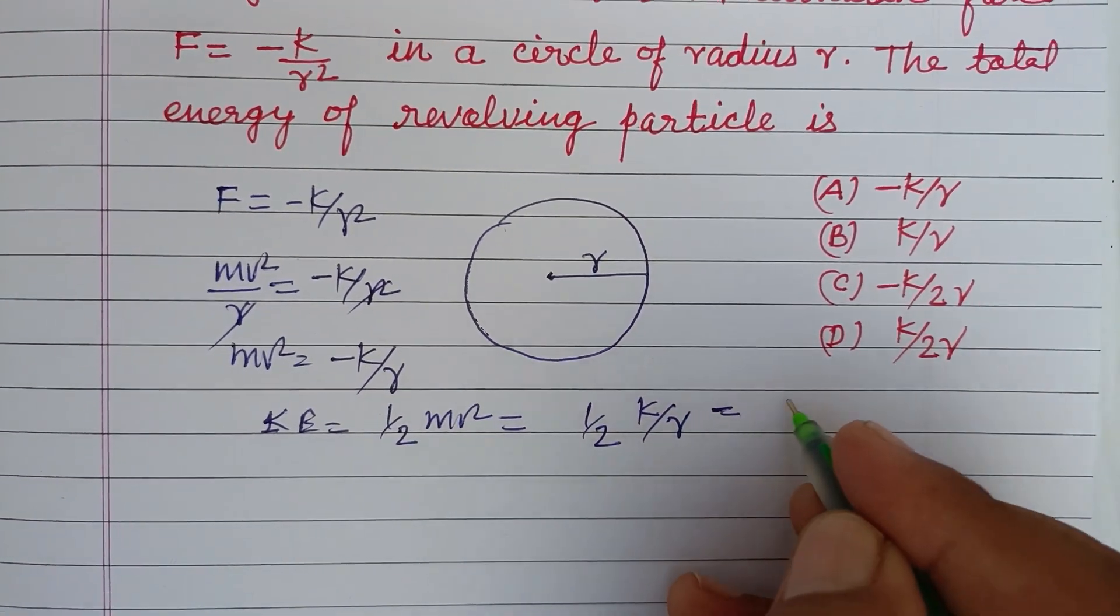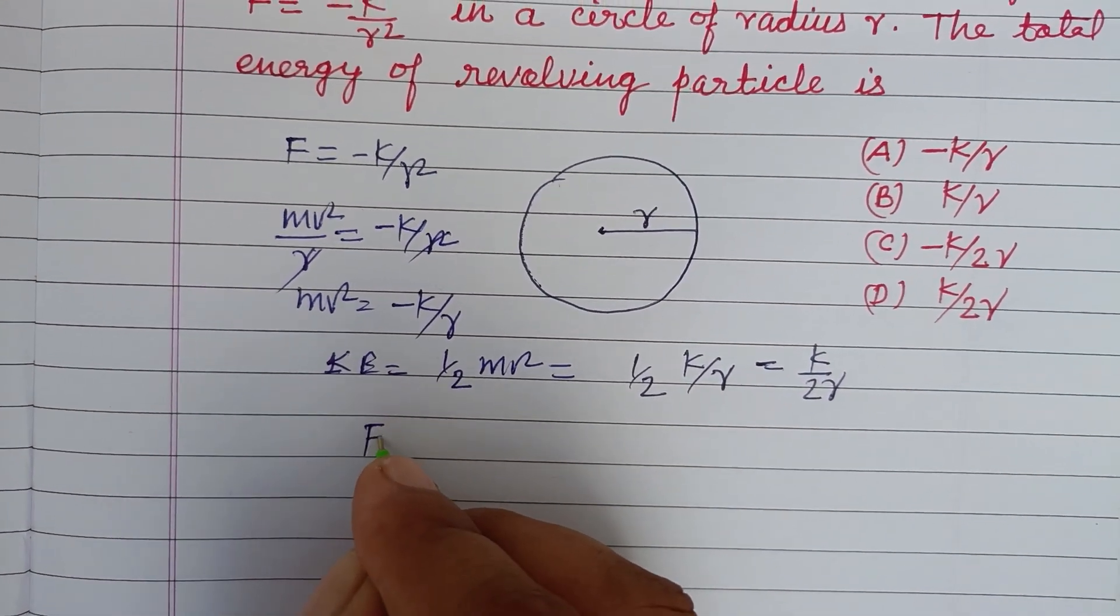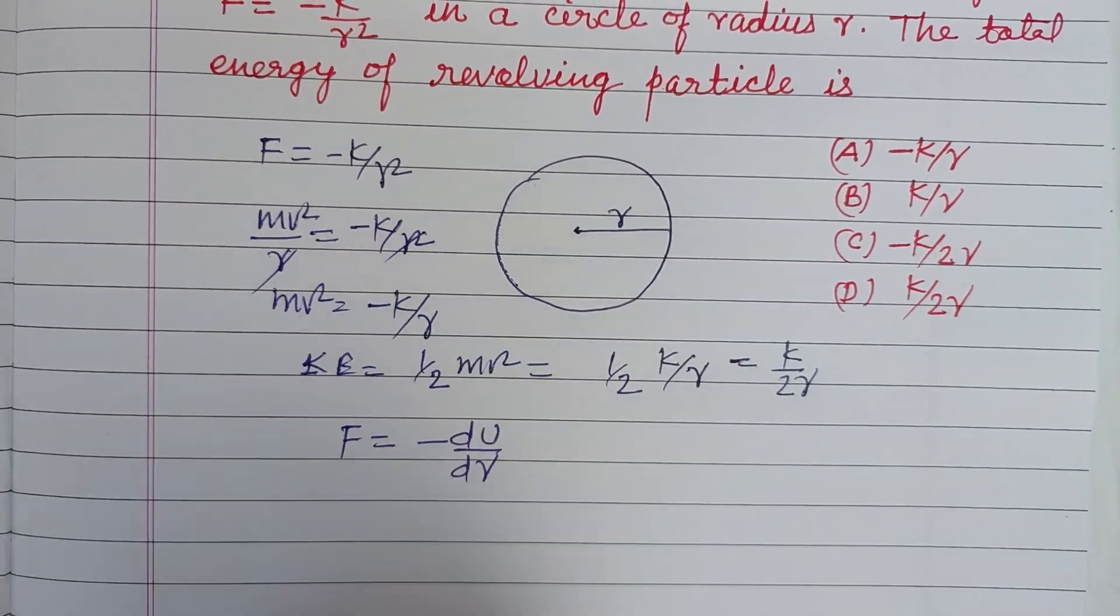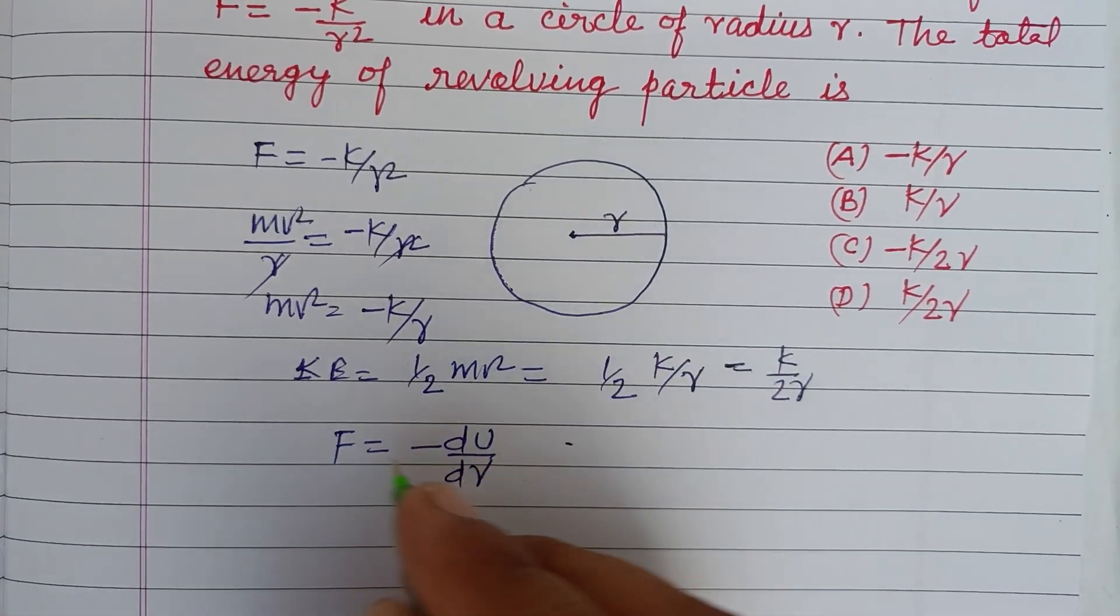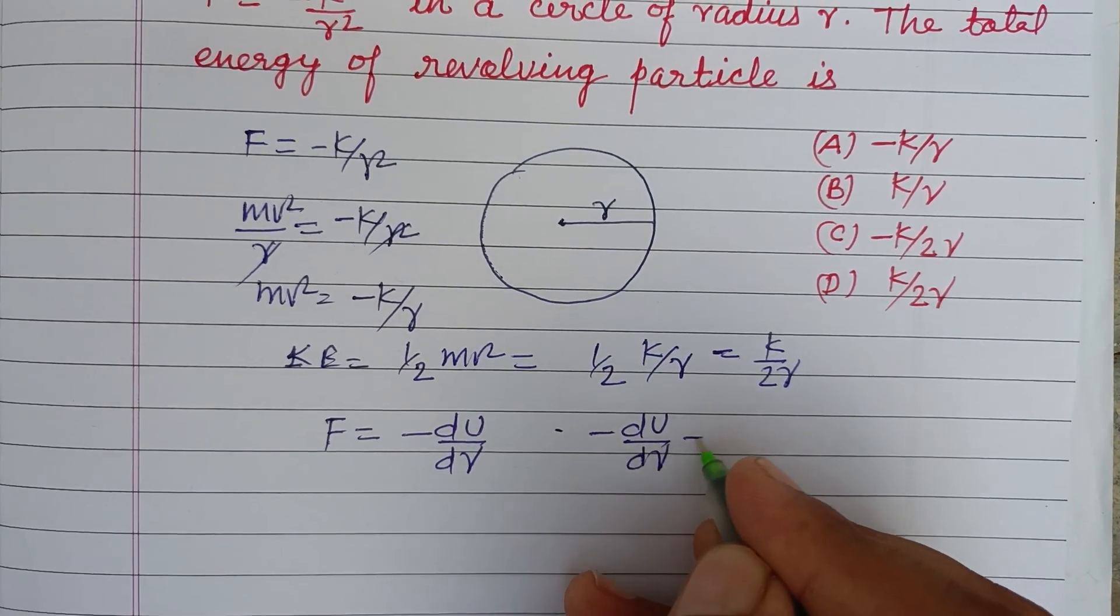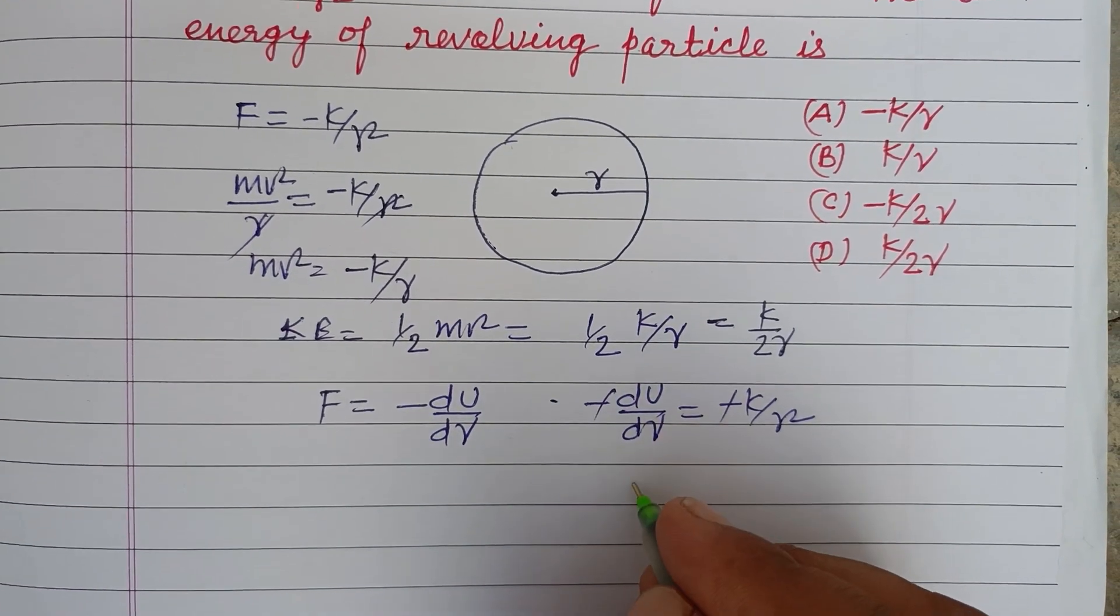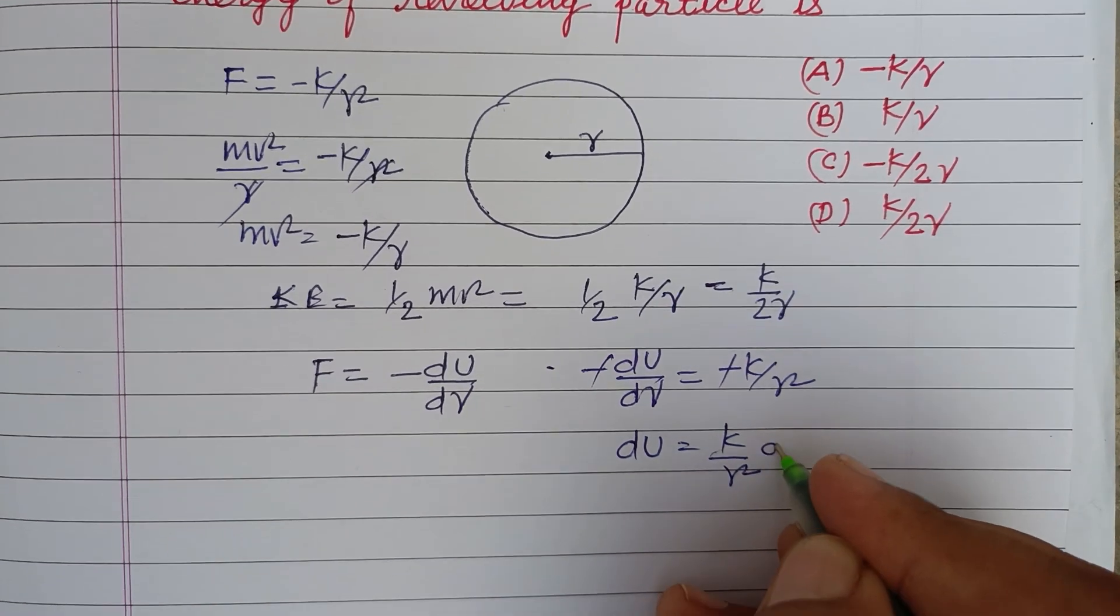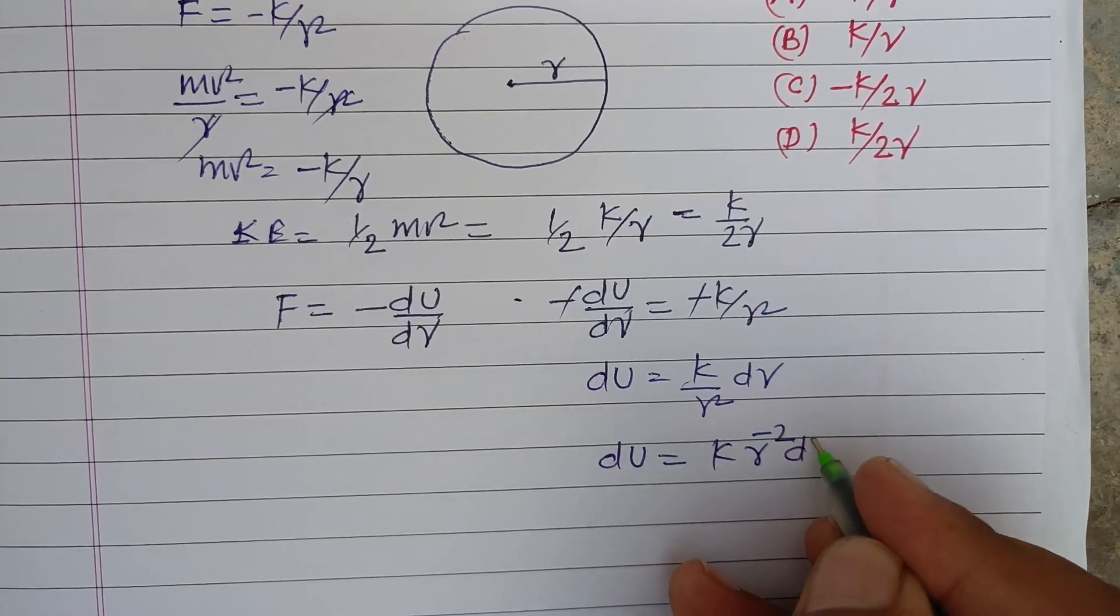Now for potential energy, F equals minus dU over dR. We know this. So F is given to us, minus dU over dR equals minus K over R square. Minus minus cancel here. dU equals K over R square dR. dU equals K R to the power minus 2 dR.